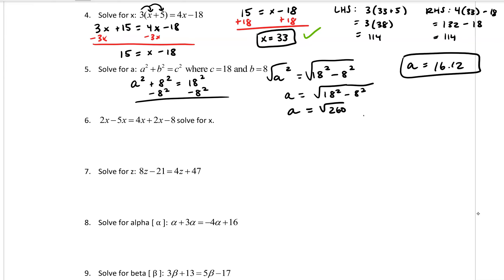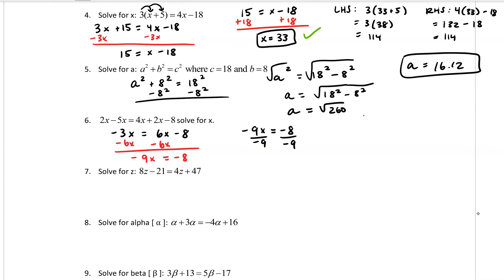Number 6: 2x minus 5x simplifies to negative 3x, which equals 4x plus 2x minus 8, or 6x minus 8. Subtract 6x from both sides to get negative 9x equals negative 8, then divide both sides by negative 9 to get x equals 8 over 9.